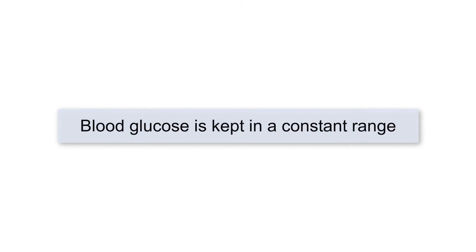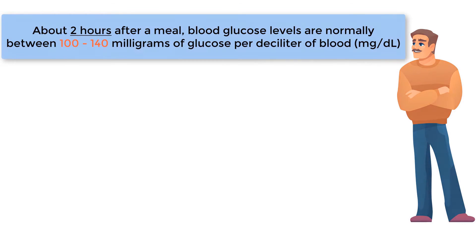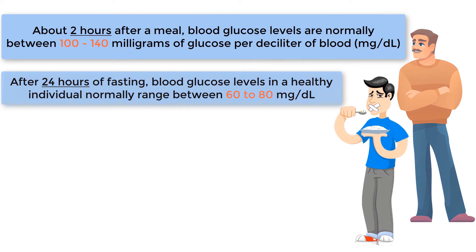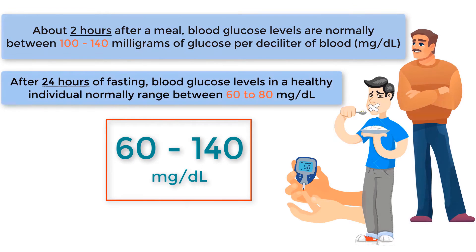Blood glucose is kept in a constant range. In a healthy individual, about two hours after a meal, blood glucose levels are normally between 100 and 140 milligrams of glucose per deciliter of blood. After 24 hours of fasting, blood glucose levels in a healthy individual normally range between 60 to 80 milligrams per deciliter. Thus, the range of blood glucose in a healthy individual from fasted to well fed is between 60 to 140 milligrams per deciliter. When factors act to increase or decrease blood glucose, the body responds by keeping blood glucose in this range.